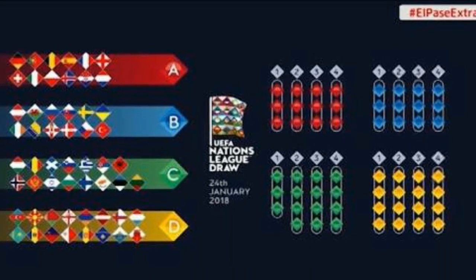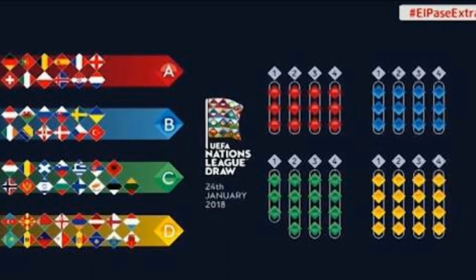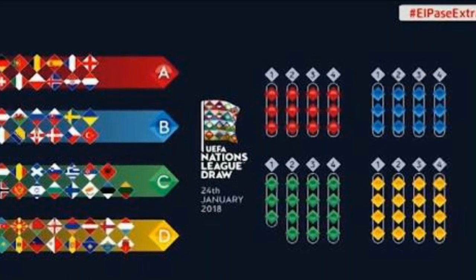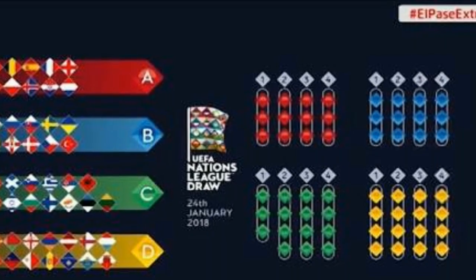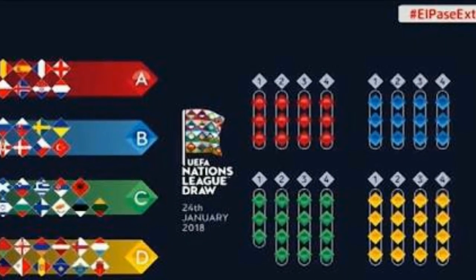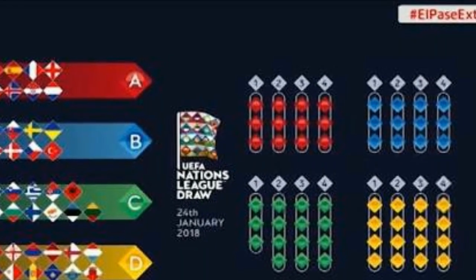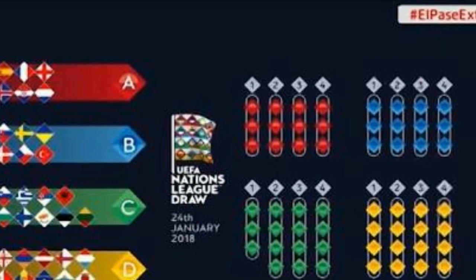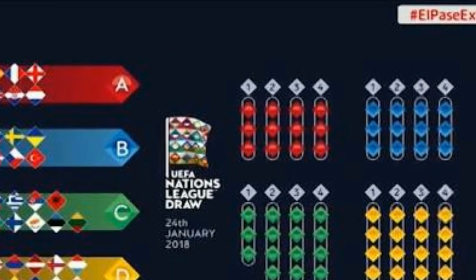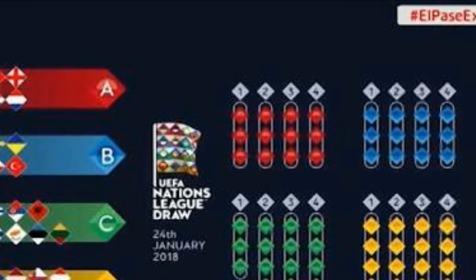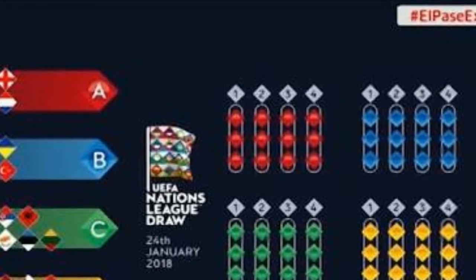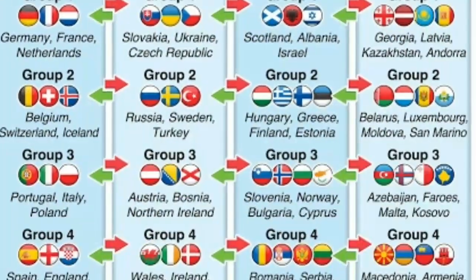League B Group 1: Czech Republic, Ukraine, Slovakia. Group 2: Turkey, Sweden, Russia. Group 3: Northern Ireland, Bosnia and Herzegovina, Austria. Group 4: Denmark, Republic of Ireland, Wales.